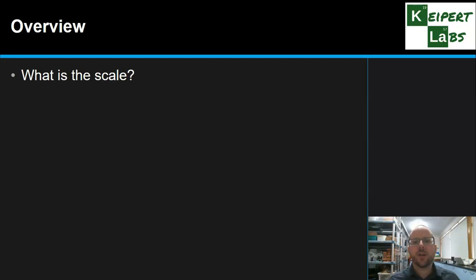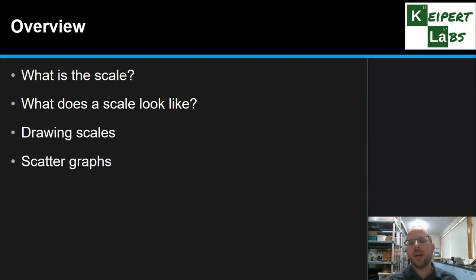So firstly we're going to look at what is the scale when we're looking at making or using a graph. We're then going to look at what does a scale look like, so we can visualize it. And then we're going to look at how do we draw one. What are some tips and strategies that we need to do in order to make it appropriate and look the best that it can. We're also then going to look at some aspects around scattergraphs and thinking about how we use scales in scattergraphs particularly.